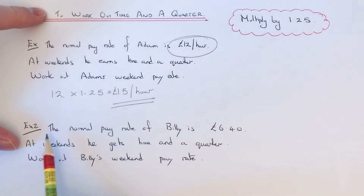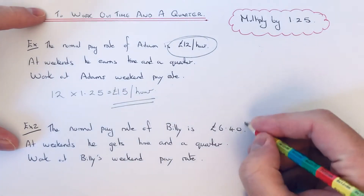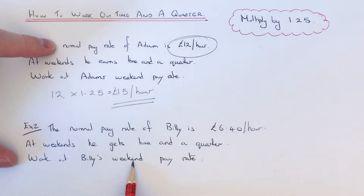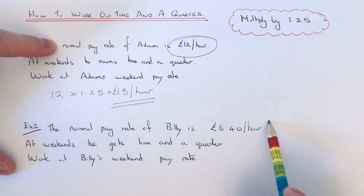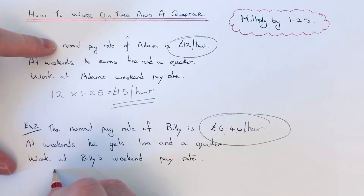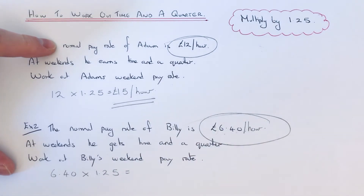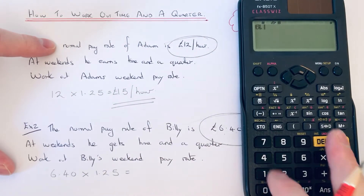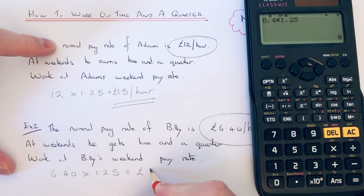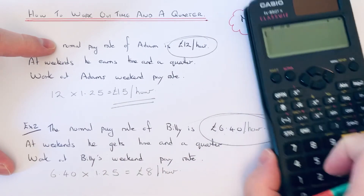Let's have a look at the second example. The normal pay rate of Billy is £6.40 per hour. At weekends he gets time and a quarter — work out Billy's weekend pay rate. Again, we just need to take his normal pay rate and multiply it by 1.25. So 6.40 times 1.25 gives an answer of £8 per hour.